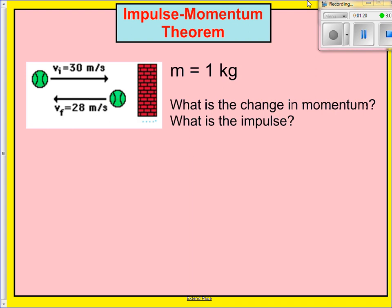Let's take a look at this problem. You have a tennis ball being thrown at a brick wall. The initial velocity is 30 meters per second right before it hits the wall. Right after it hits the wall, it has a velocity of 28 meters per second. The initial stands for the velocity the moment before it hits the wall, and the final represents the velocity the moment after. The mass of this tennis ball is one kilogram. We want to find the change in momentum and the impulse.